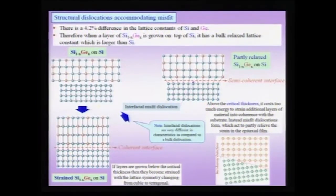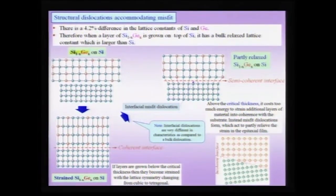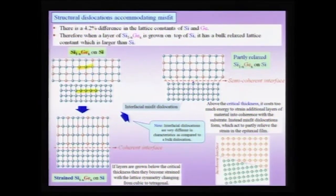Now let us consider how structural dislocations can accommodate linear misfit. Consider the growth of silicon-germanium of some composition — for instance Si₅₀Ge₅₀ in the diamond cubic structure grown on a silicon substrate. Silicon has about a 4.2% lattice parameter misfit with germanium, and this alloy itself has a lattice parameter misfit with the silicon substrate. When you epitaxially grow such a film on top of a substrate, the film has a tetragonal distortion and is forced to grow such that lattice planes are continuous across the interface.